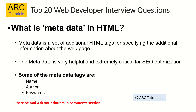What is metadata in HTML? Metadata is a set of additional HTML tags for specifying additional information about a web page. It is very helpful and critical for SEO optimization. Some common metadata tags you will find in HTML pages include name, author, keywords, URL, etc. Using these, search engines know what kind of content is on the web page, making metadata extremely important for implementation, especially from an SEO perspective.